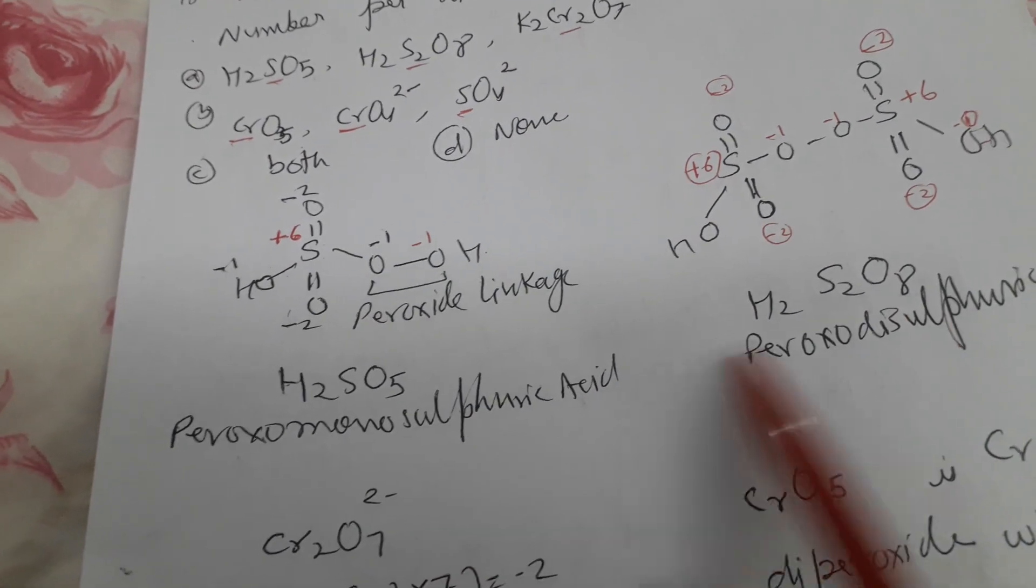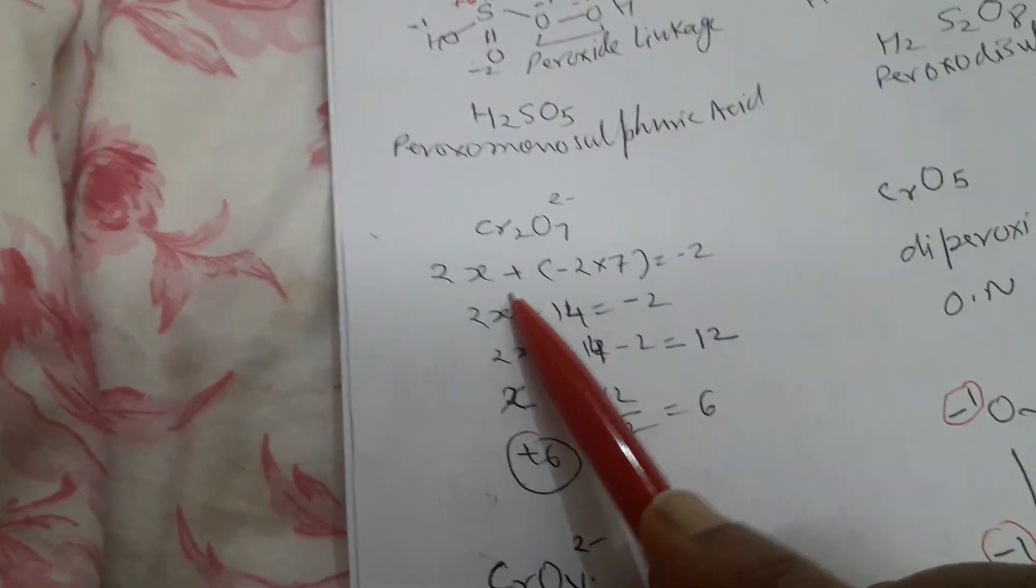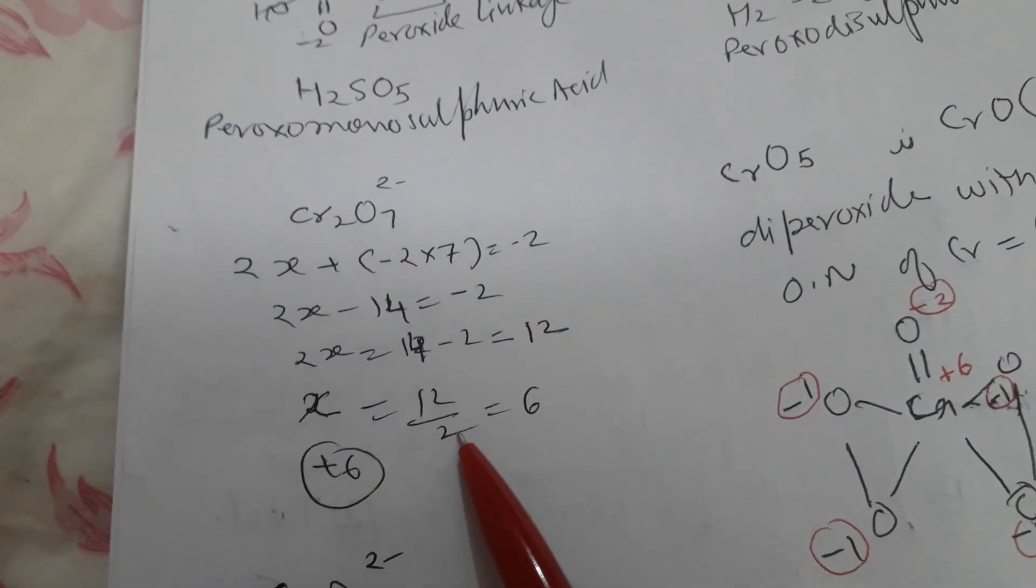So peroxido monosulfuric acid as well as disulfuric acid are having plus 6 oxidation state. Now we will see Cr₂O₇²⁻ also having plus 6 oxidation state.